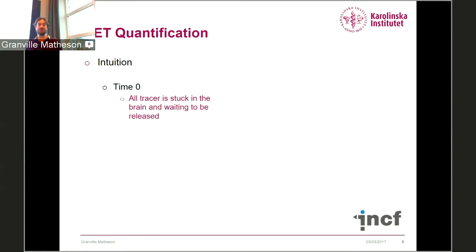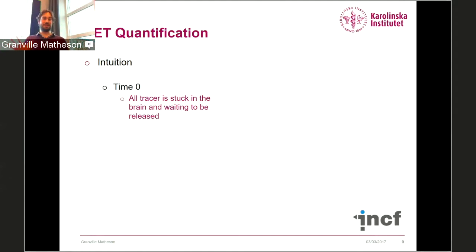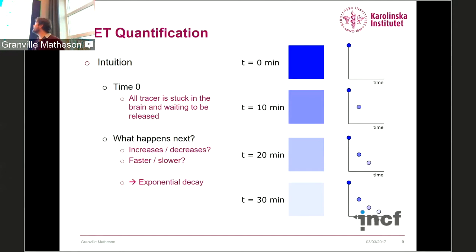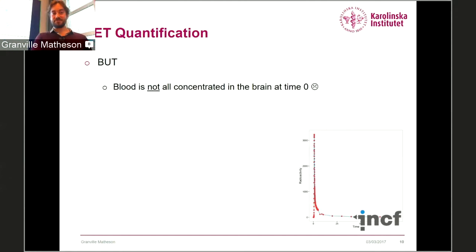To work your intuition: imagine at time zero we theoretically stick all of the radiotracer into the brain — none in the blood. What happens next? It decreases in the brain, and that decrease gets slower with time — basically exponential decay. At time zero we have 100%, at time two we have half, at time three half of that, and so on. The only problem is that in reality, blood is not all concentrated in the brain at time zero.